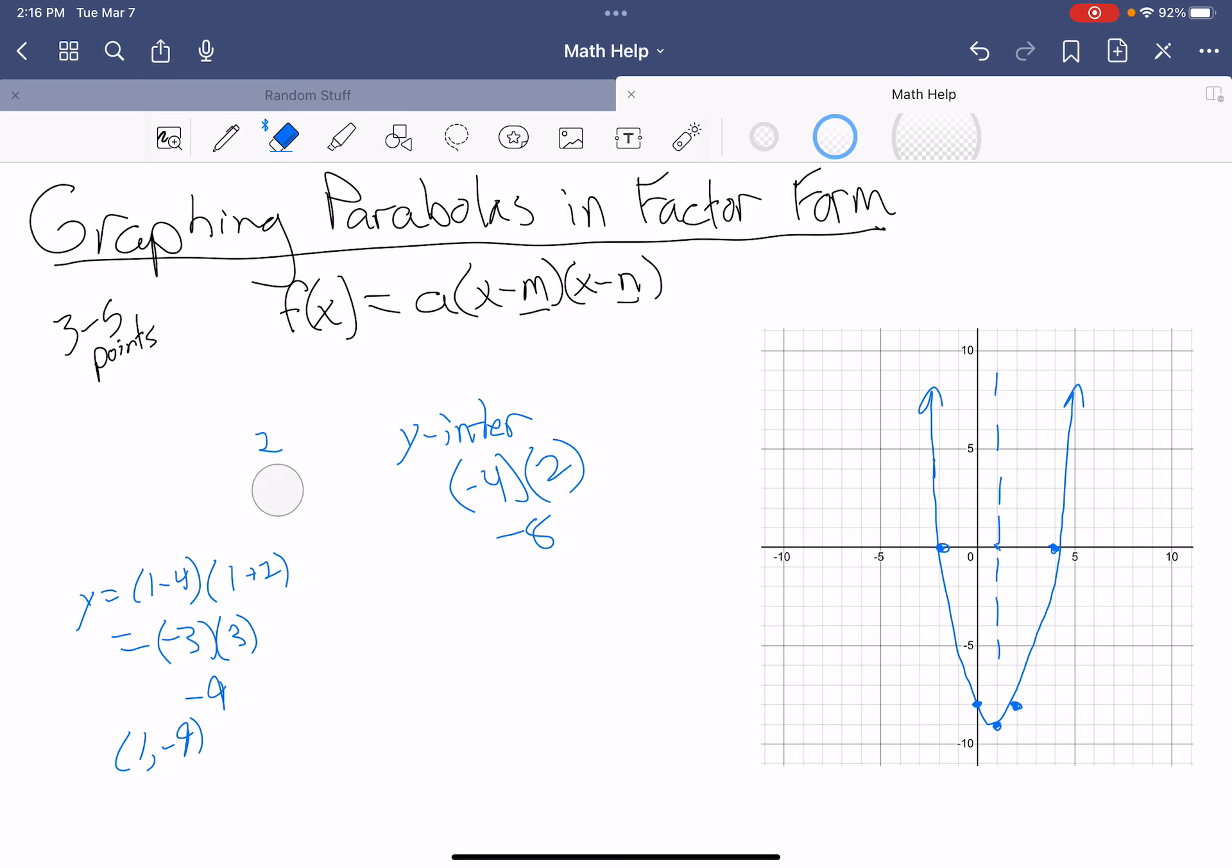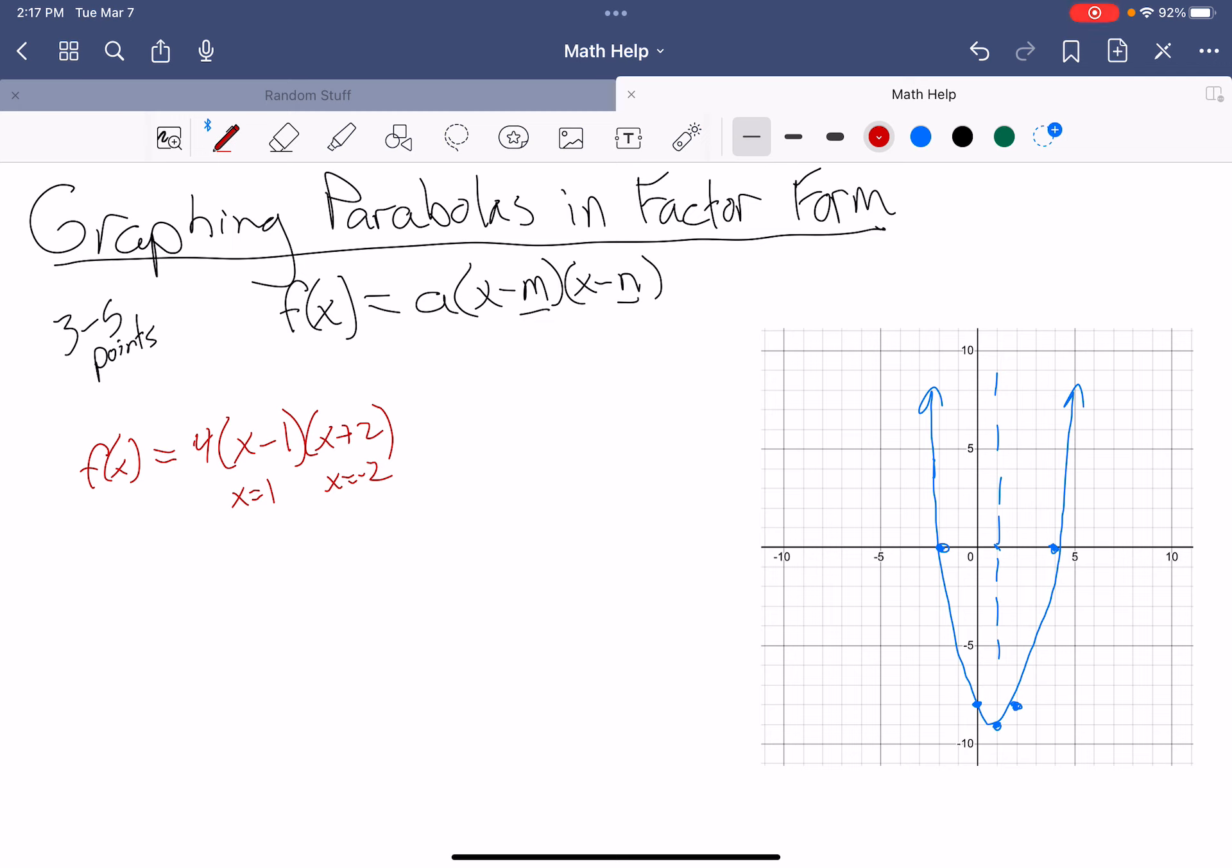Now let's look at a different example and make it maybe a little more complicated. Let's go with a new color, red. Let's say we'll switch it up. We'll go f of x equals 4 times the quantity x minus 1, x plus 2. Right off the bat, I know I have x-intercepts at 1 and at negative 2. So 1, negative 2.